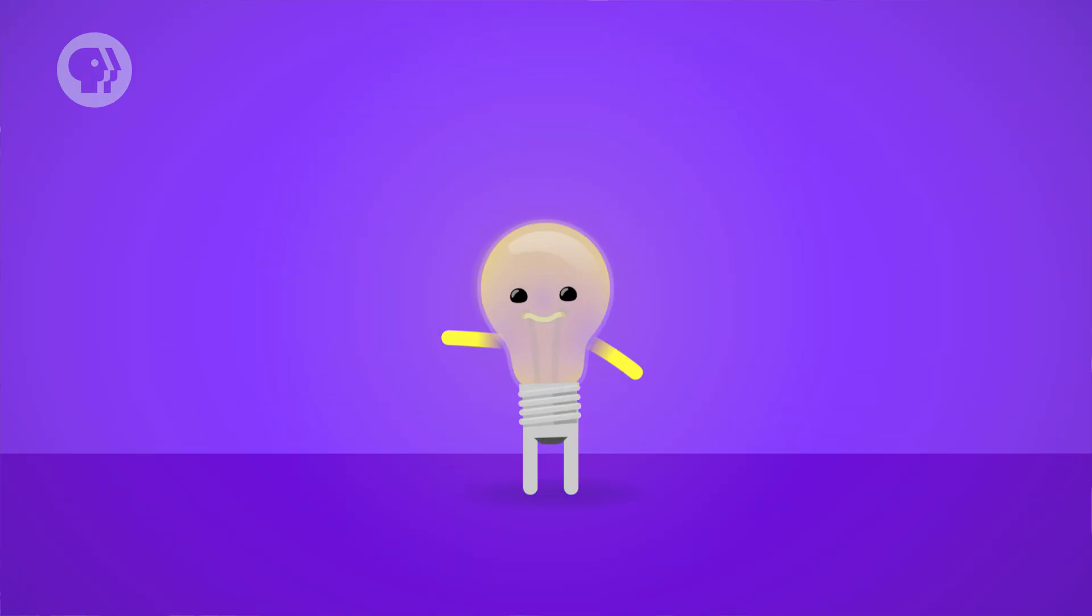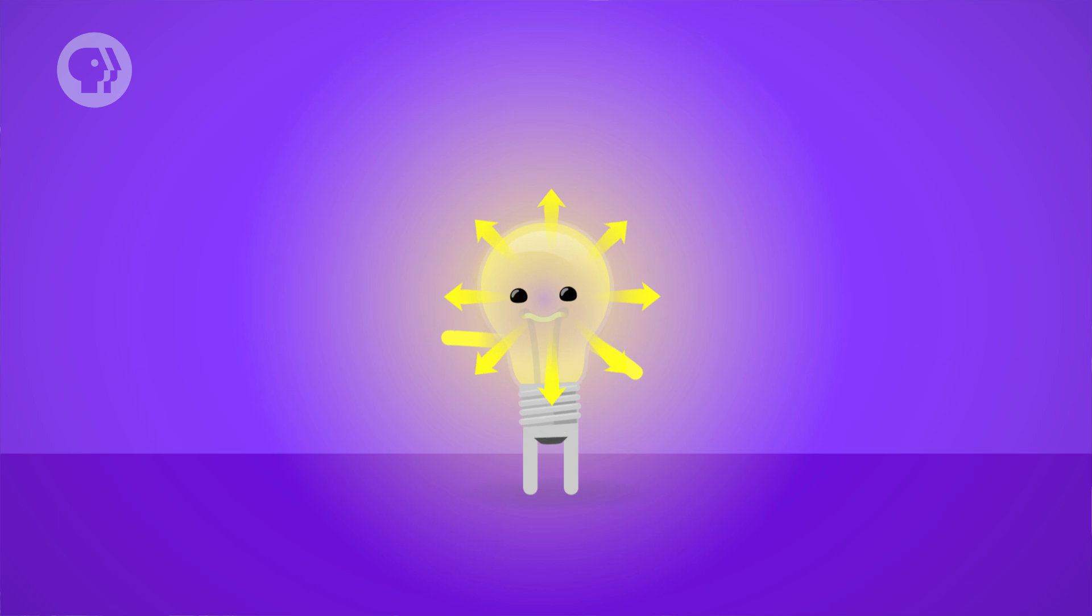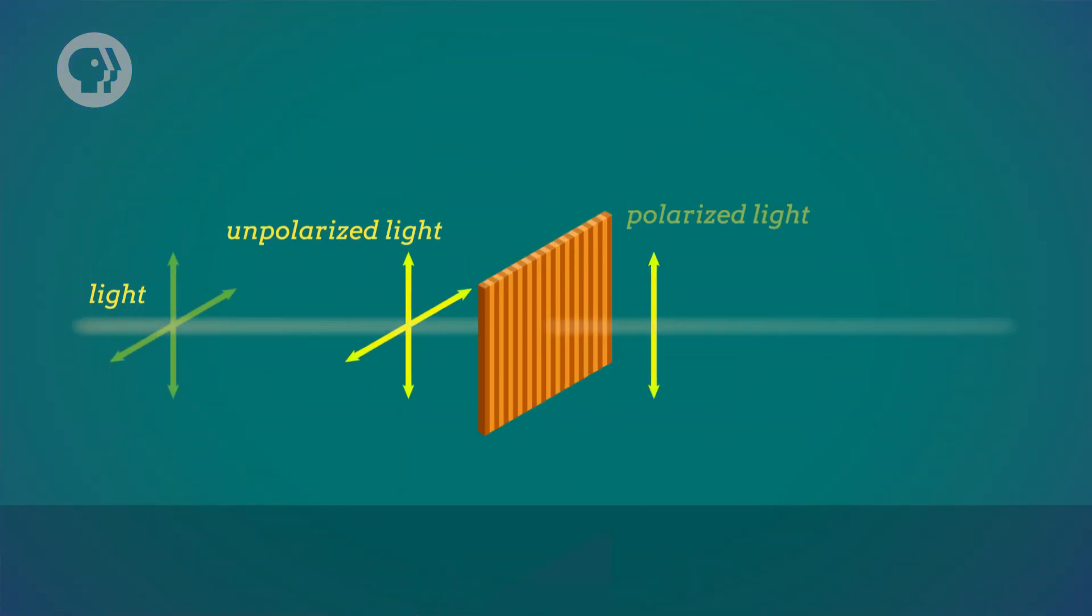The filtering of light depending on its oscillation direction is called polarization. The light from a light bulb, or from the sun, has electric fields oscillating in all possible directions. But you can aim that light through a filter, like a vertical slit, so that only one kind of polarized light can pass through.